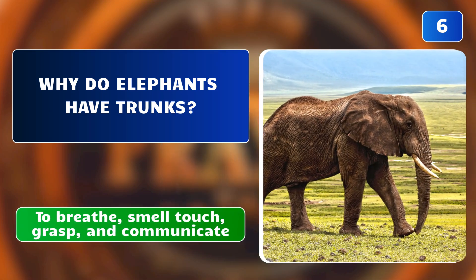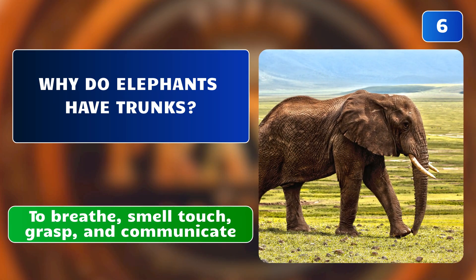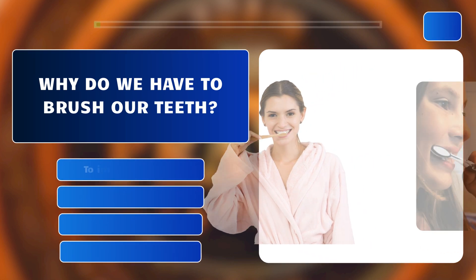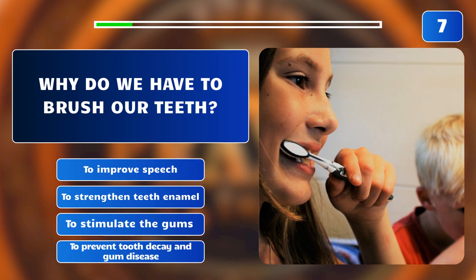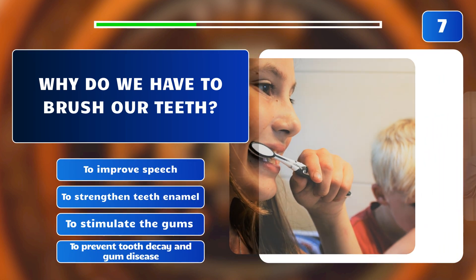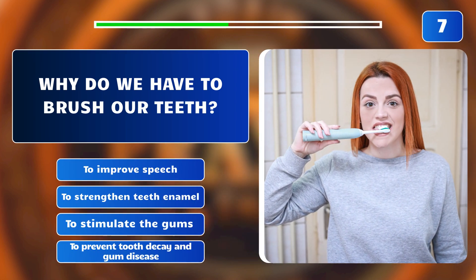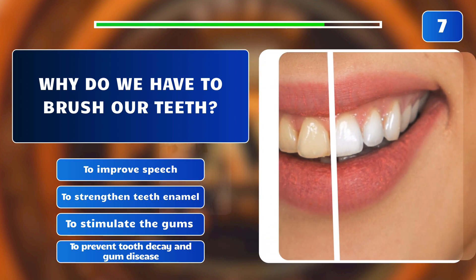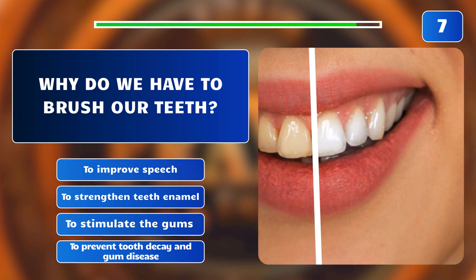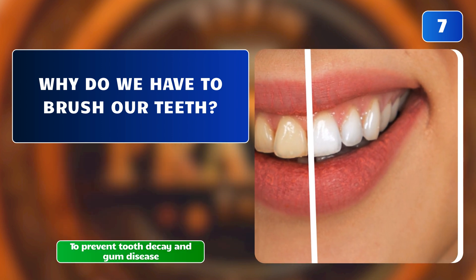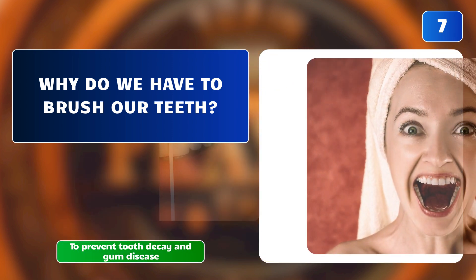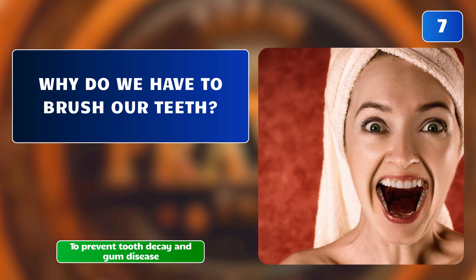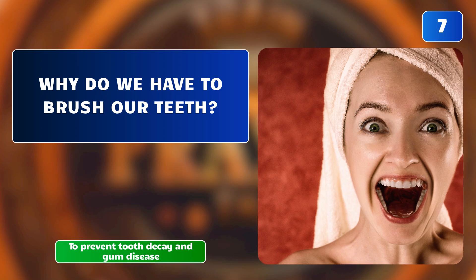Why do we have to brush our teeth? To improve speech? To strengthen teeth enamel? To stimulate the gums? To prevent tooth decay and gum disease? The correct answer is: to prevent tooth decay and gum disease. We brush our teeth to prevent tooth decay and gum disease by removing plaque, bacteria, and food particles.